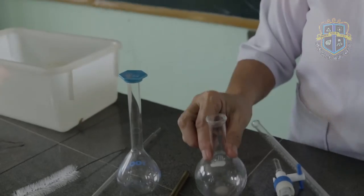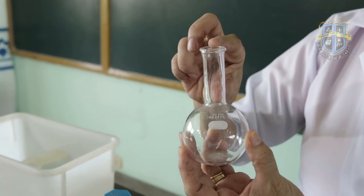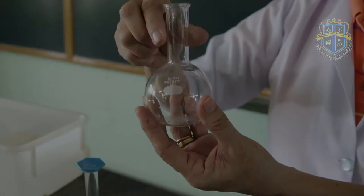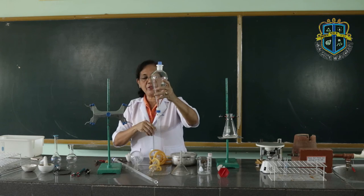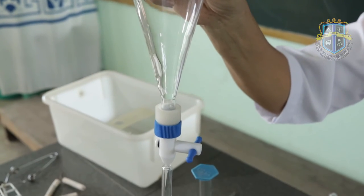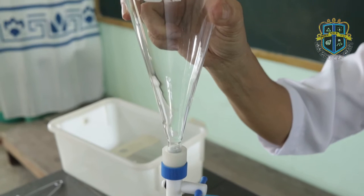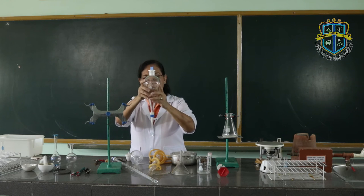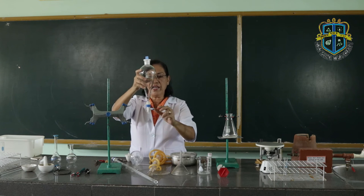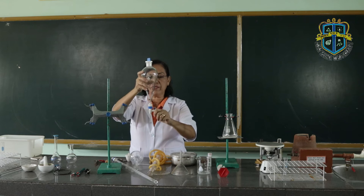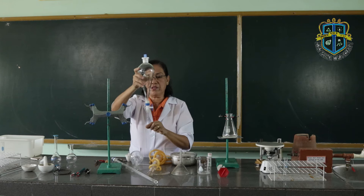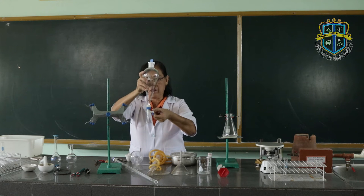This is the Florence flask, with a longer neck and a rounded bottom. This is a separatory funnel. The separatory funnel is used to separate two or more immiscible liquids. When you have the content inside the separatory funnel, you turn the valve so that the liquid flows down the tube, then close the valve.